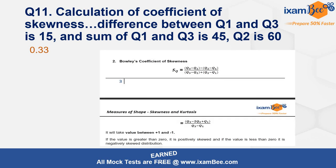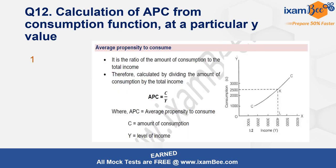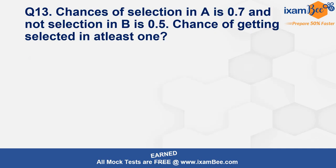Next was a calculation of coefficient of skewness using Q1, Q3, and Q2 — just applying the standard formula. Then a question on APC (average propensity to consume), which is the ratio C/Y. From the consumption function given, at the particular Y value the answer was coming out to be one.